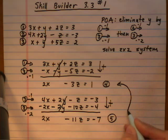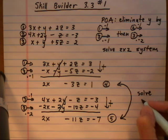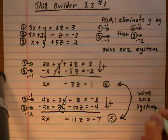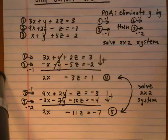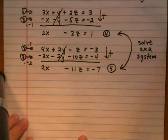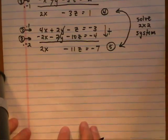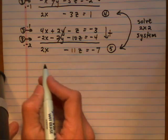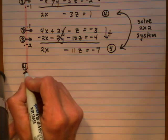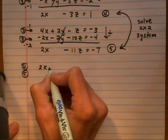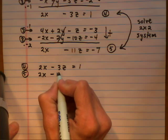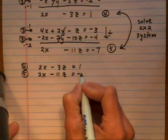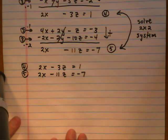Notice we've got a 2x in both equations with the y terms cancelled out. Equations 4 and 5 form our 2×2 system — they must have the same two variables so we can solve for one and back substitute for the others. We can now pretend we're starting from scratch: solving the system 2x − 3z = 1 and 2x − 11z = −7.